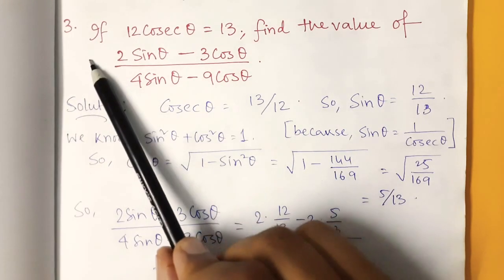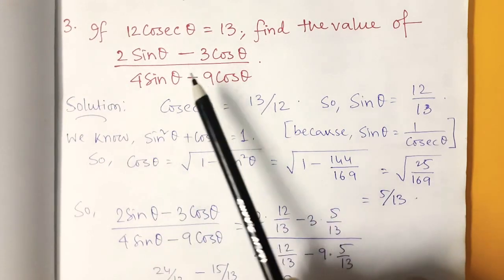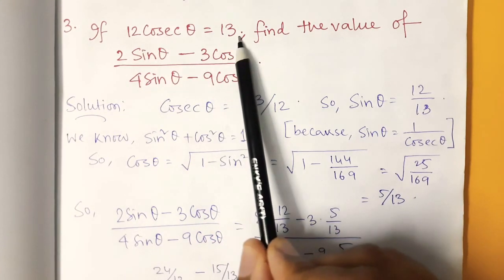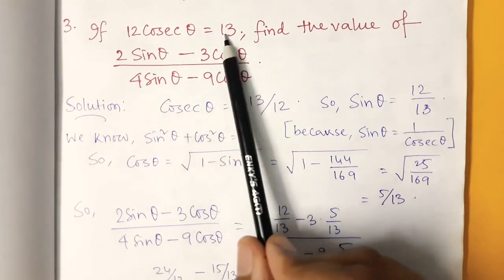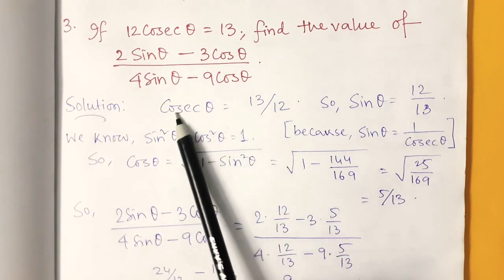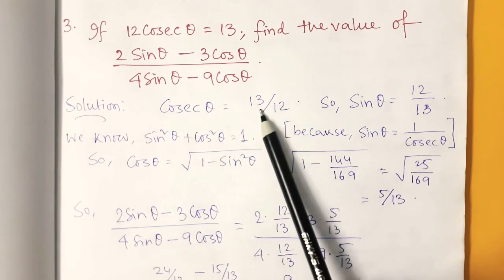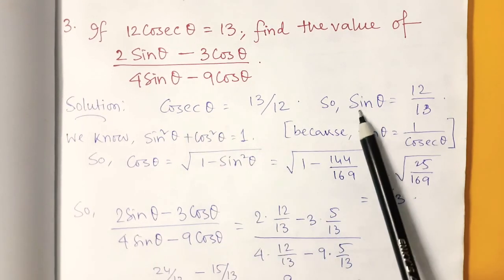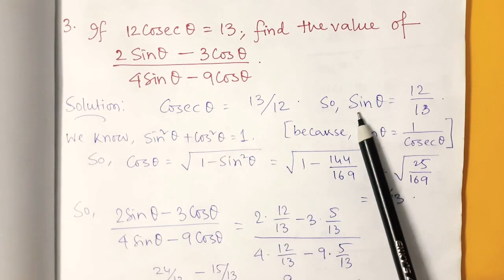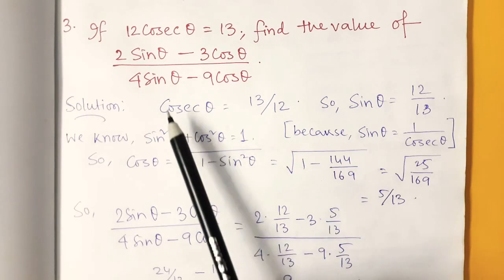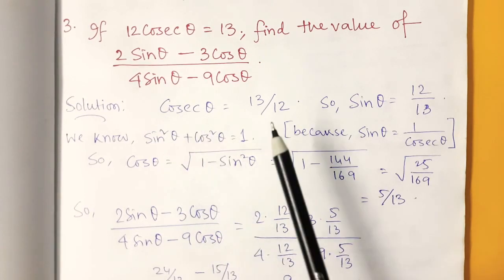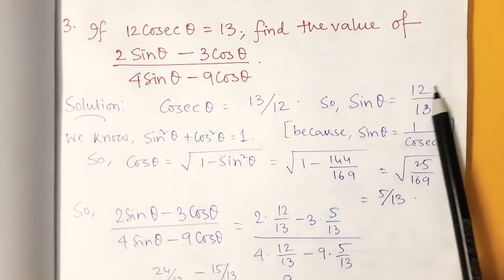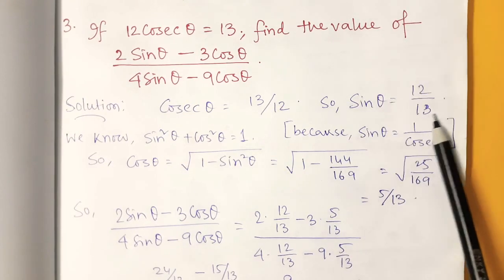This is problem number 3. Here given is 12 cosec θ equals 13. From that we can write cosec θ is 13 by 12. So what is the value of sin θ? Sin θ is 1 by cosec θ, so 1 by (13 by 12) which is 12 by 13.